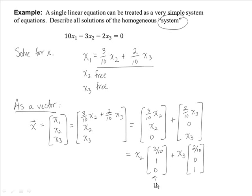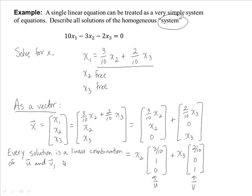Calling these vectors u and v respectively, every solution is a linear combination of u and v. The solution set is simply the span of u and v. Since neither u nor v is a scalar multiple of the other, the solution set is a plane through the origin, not a line.